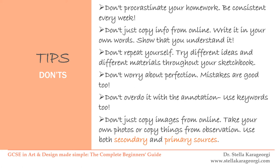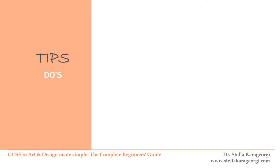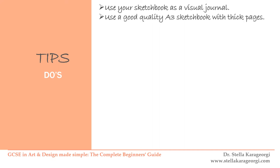Secondary sources are material that others produced, and primary sources are your own photos or drawings from direct observation. For do's: use your sketchbook as a visual journal. Use a good quality A3 sketchbook with thick pages on which you can use both wet and dry mediums, in either portrait or landscape mode. You can glue materials onto the pages, and if your sketchbook does not close properly, that's great — it means it has diverse content. Stick a copy of the AOs onto the first page of your journal so you can always refer back to it.